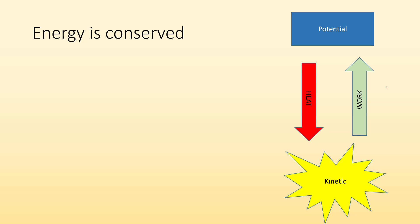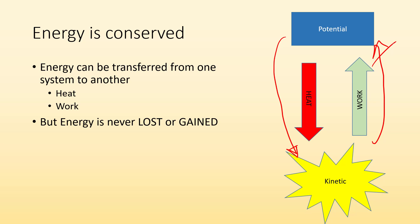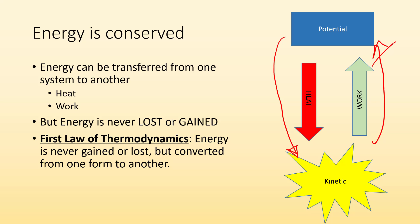Let's start with talking about energy. Turns out energy is conserved. What does that even mean? Well, energy can be transferred from one system to another. If I got some potential energy, maybe I can transfer it into another system in the form of kinetic by giving off heat. Or maybe I can use some of that kinetic energy to do some work and turn it into potential. But the takeaway is that energy is never lost or gained. It's only transferred. You can't create energy. You can't destroy energy. And that's the first law of thermodynamics. Energy is never gained or lost, but converted from one form to another.